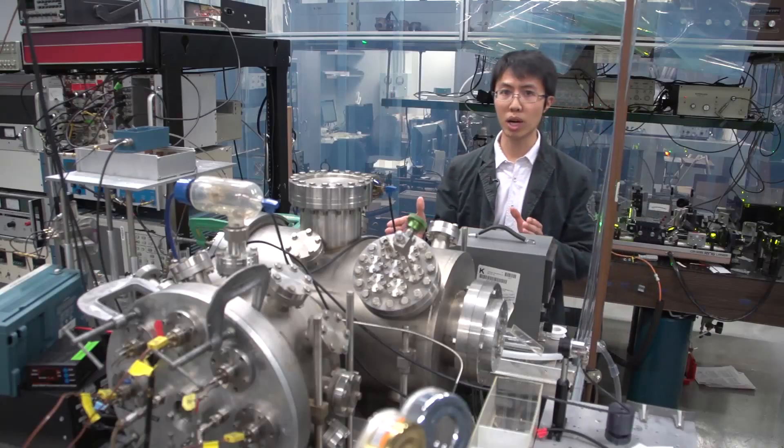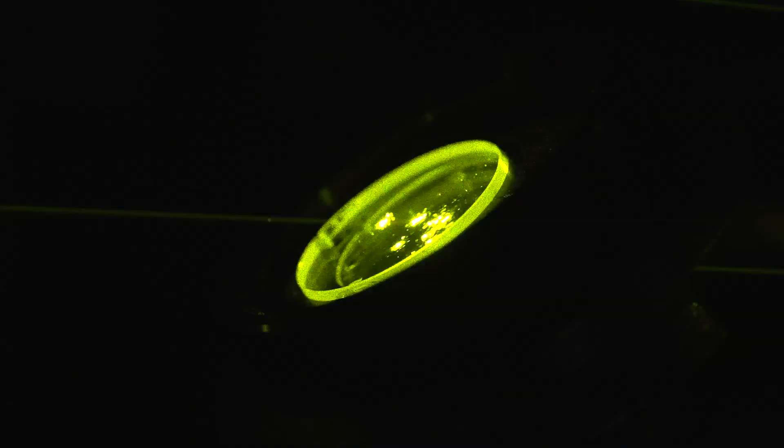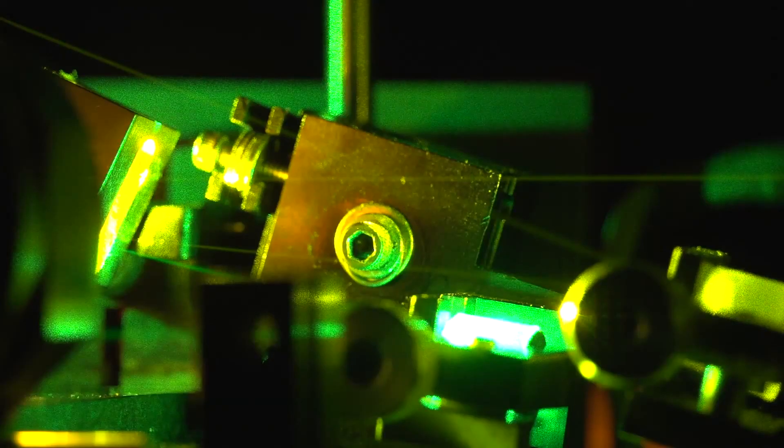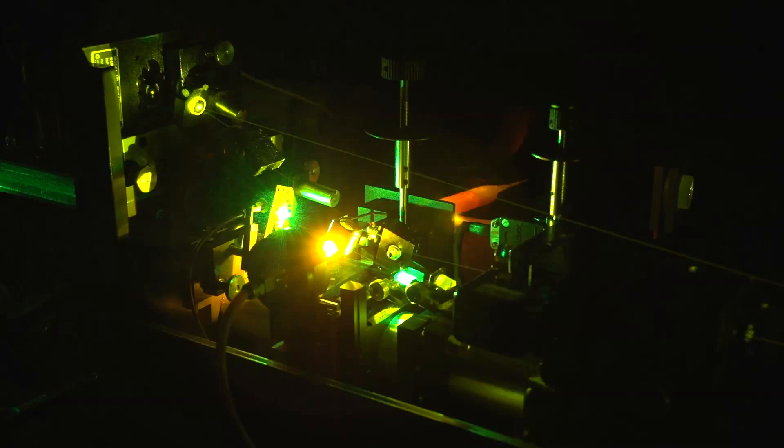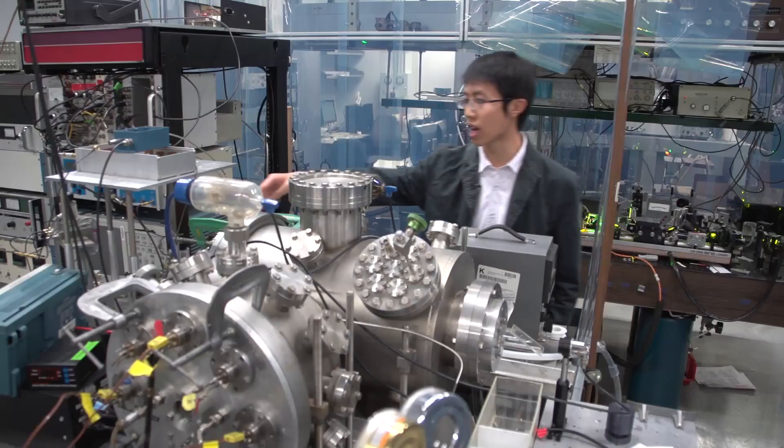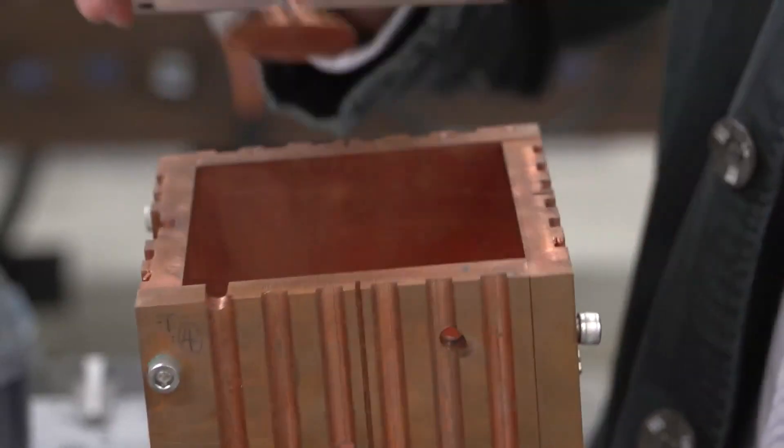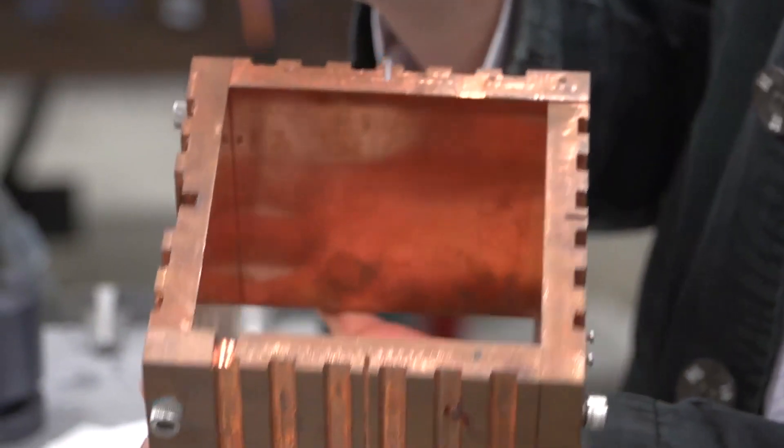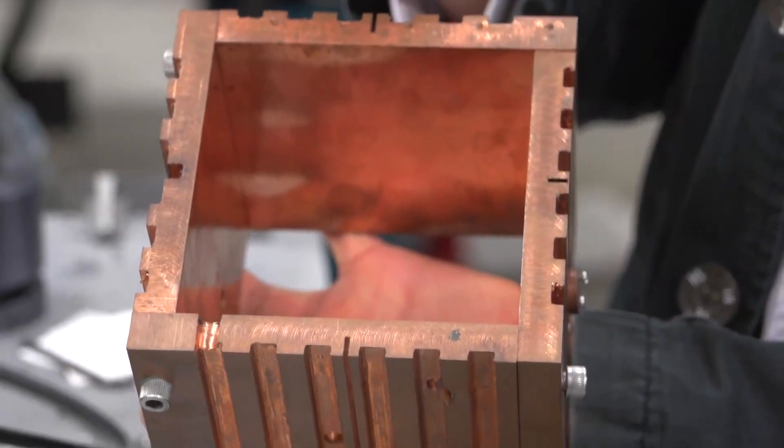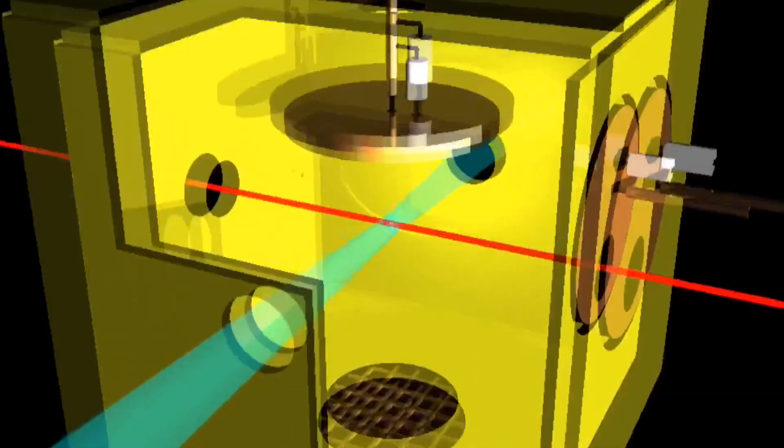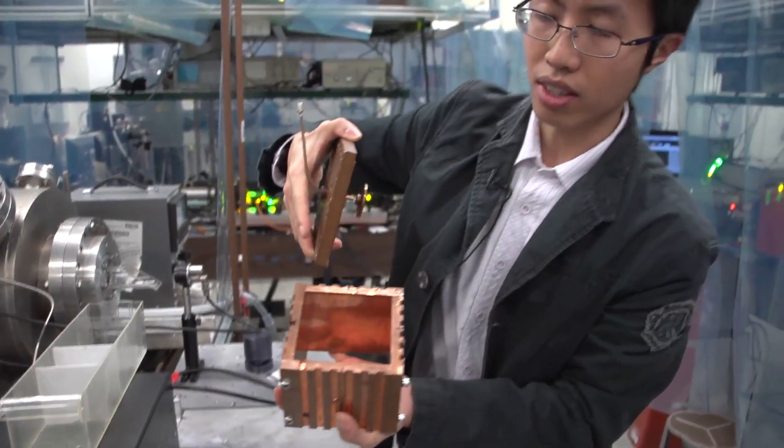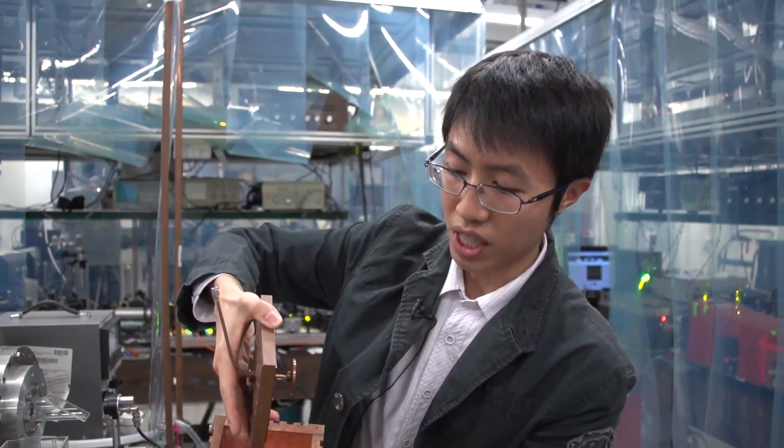This is the chamber where we do our experiments. We have a laser light which is generated from our optics table, and the laser goes through this way and finally ends up inside this chamber. This copper box is what is inside this chamber. The atoms are actually in the center of this copper box. We have a laser beam going in this way, and the atomic beam going in this way, and they intercept each other in the center of here.